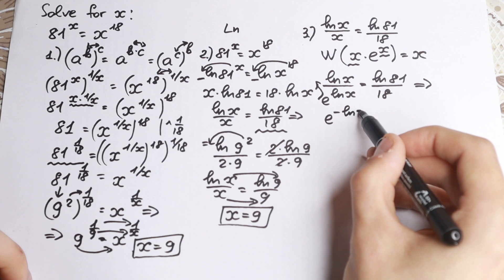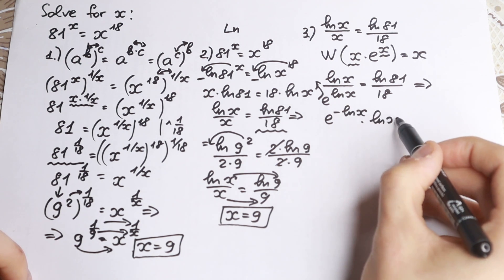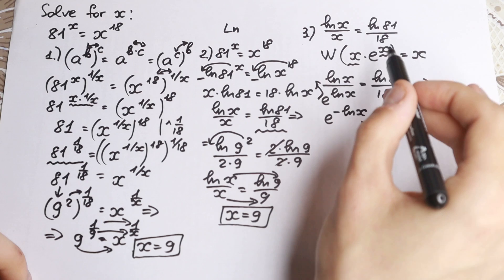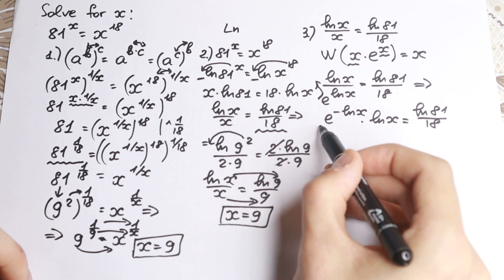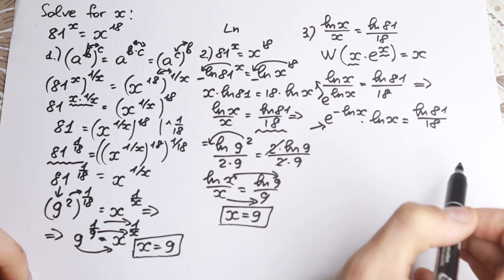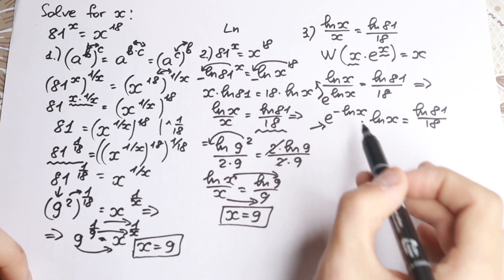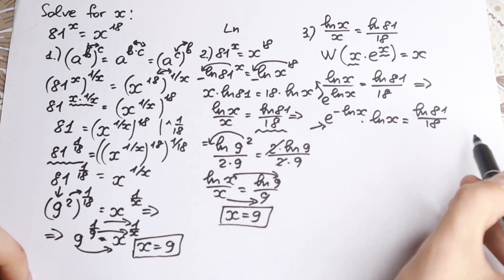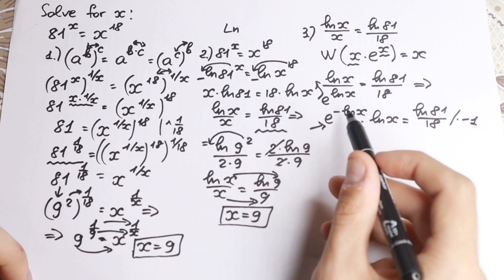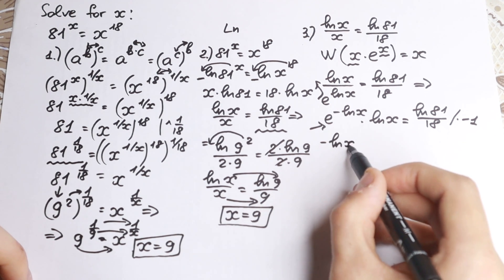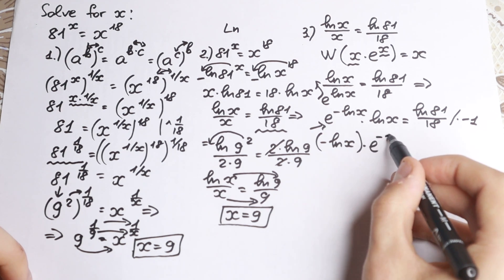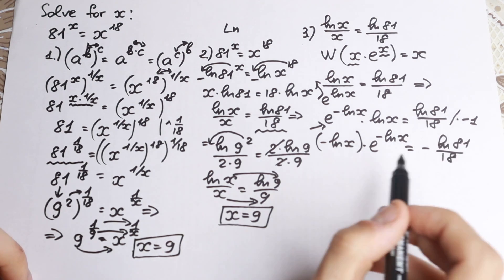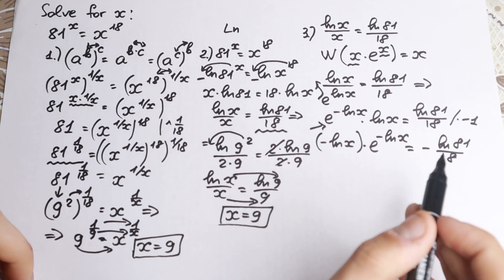We will have e to the power minus natural log x, times natural log x, equals natural log 81 over 18. Looking at the Lambert W form, we have e and the same element appearing in both the base expression and the exponent, but there's a minus natural log x in the power. So let's multiply both sides by minus one, giving us: minus natural log x, times e to the power minus natural log x, equals minus natural log 81 over 18.